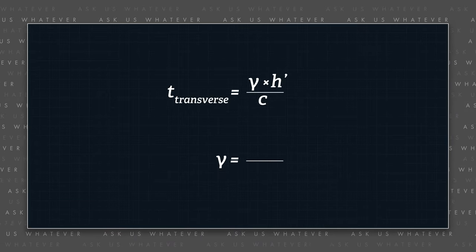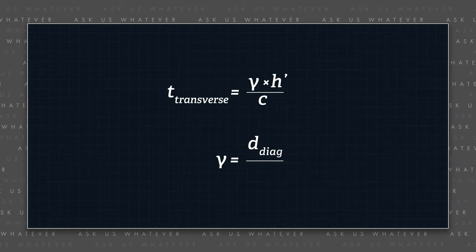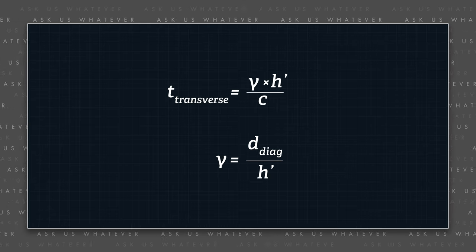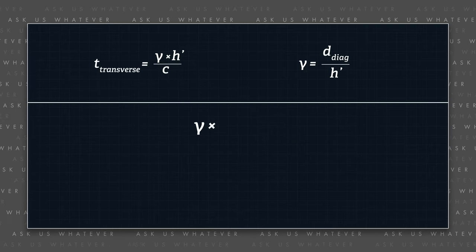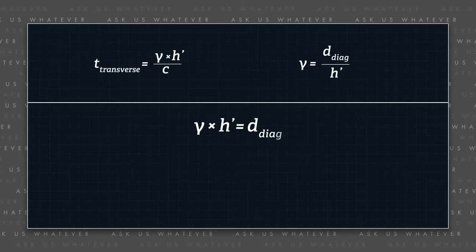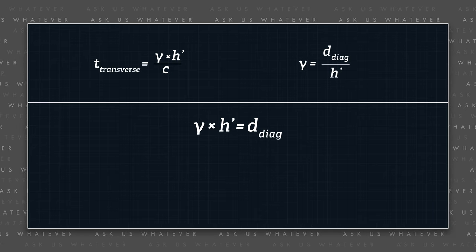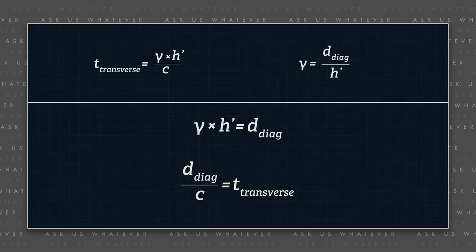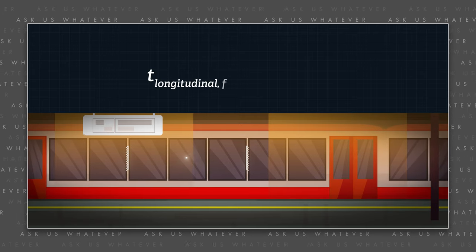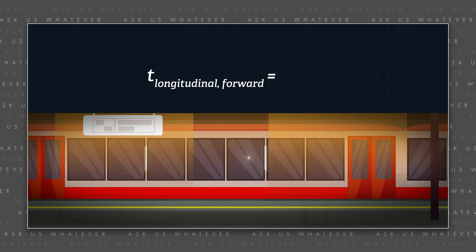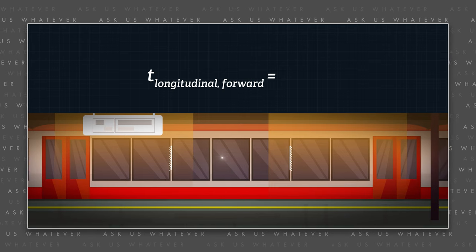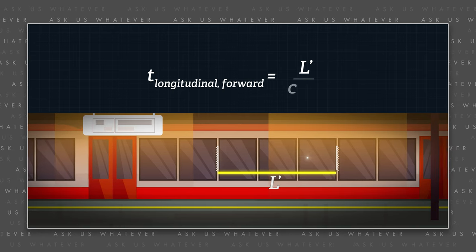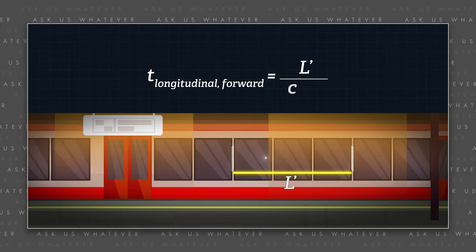The Lorentz gamma factor is the ratio of the diagonal path that light travels, as seen by people in the stationary perspective, divided by h'. You can think of the Lorentz factor as a multiplier that converts the transverse distance h' into the diagonal distance. When we divide the diagonal distance by light speed, we get the stationary frame time it takes light to travel the diagonal distance. For light traveling the longitudinal distance from the rear to the front of the train car, the time required from the perspective of observers in the stationary frame is the length of the train car, l', divided by the speed of light relative to the speed of the train, which is c minus v.